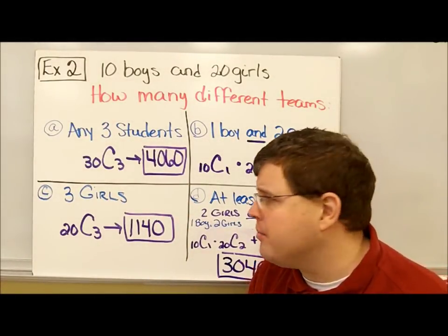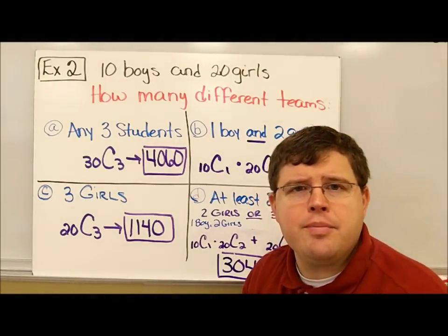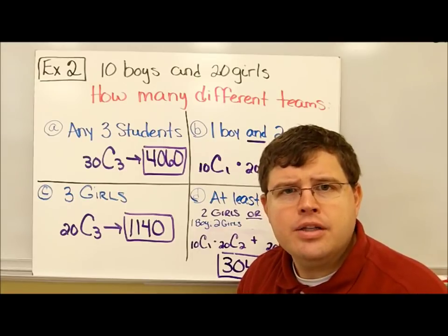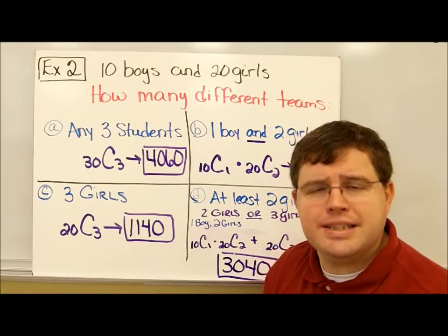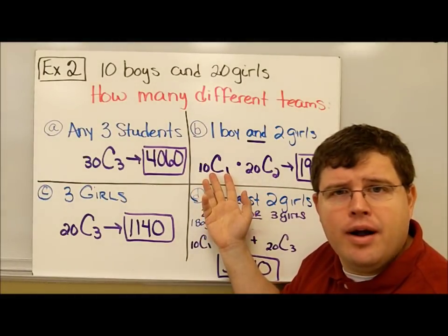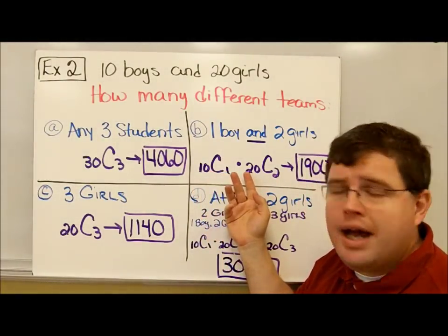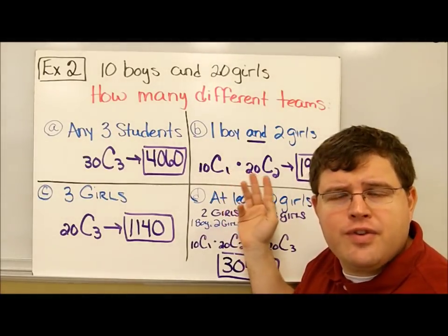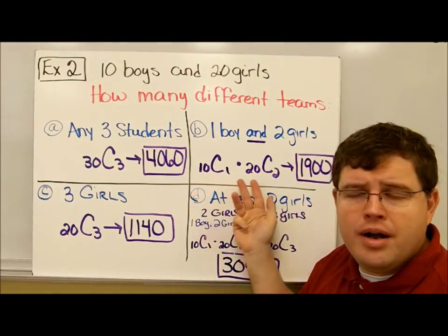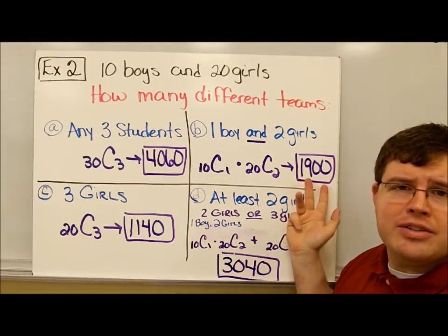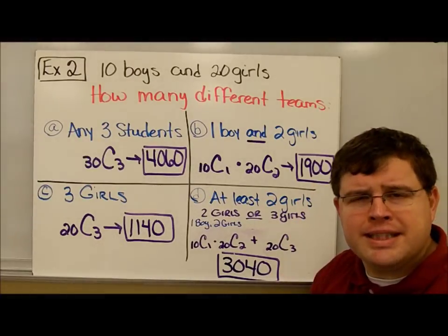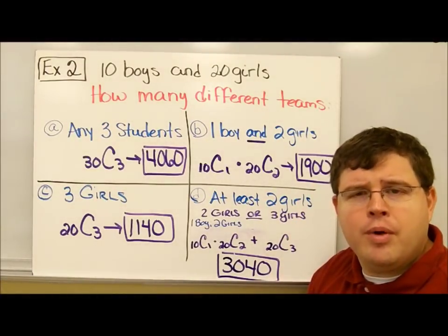Now suppose she said she really wants there to be one boy on this team and two girls. She's going to choose one boy. She has 10 boys to choose from, so that's 10C1, and 'and' means multiply. 20 girls to choose from, she's going to choose two, so 20C2. 10C1 times 20C2 gives me 1,900. There's 1,900 different teams she could assemble that have one boy and two girls.